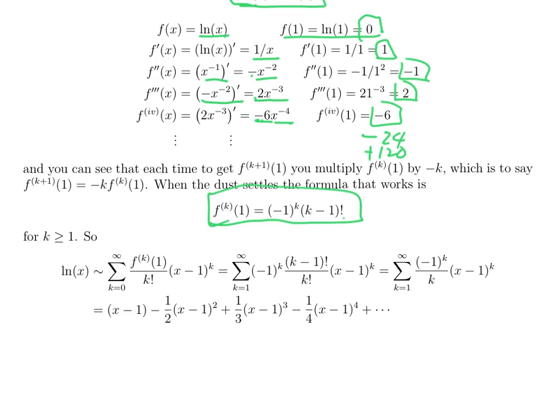That means the Taylor series for ln of x at a equals 1 looks like this and when you plug the formula for f to the k of 1 in you get minus 1 to the k k minus 1 factorial over k factorial. That you recognize as an opportunity for the recursive formula: each number factorial is that number times the previous number factorial, so the k minus 1 factorials cancel out and you are left with minus 1 to the k over k x minus 1 to the k and that looks like this: the first term is x minus 1, the second term is minus 1 half x minus 1 squared, the third term is plus 1 third x minus 1 cubed and so on.